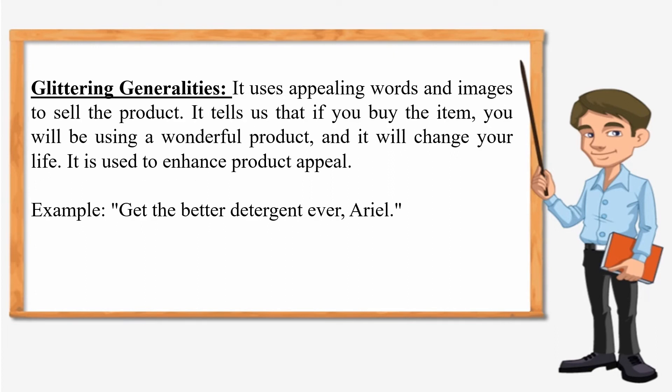The next one is glittering generalities. It uses appealing words and images to sell the product. It tells us that if you buy the item, you will be using a wonderful product and it will change your life. It is used to enhance product appeal. For example, 'Get the best detergent ever' — that is for Ariel. That is glittering generalities.